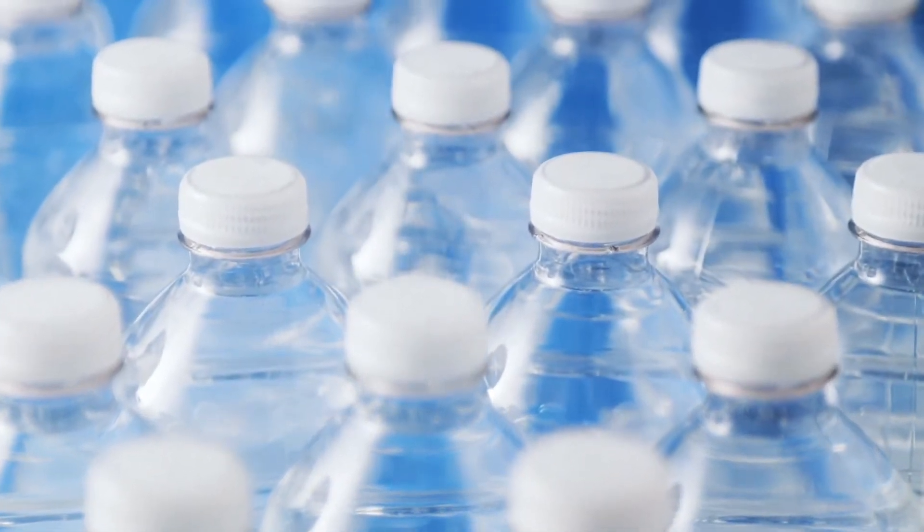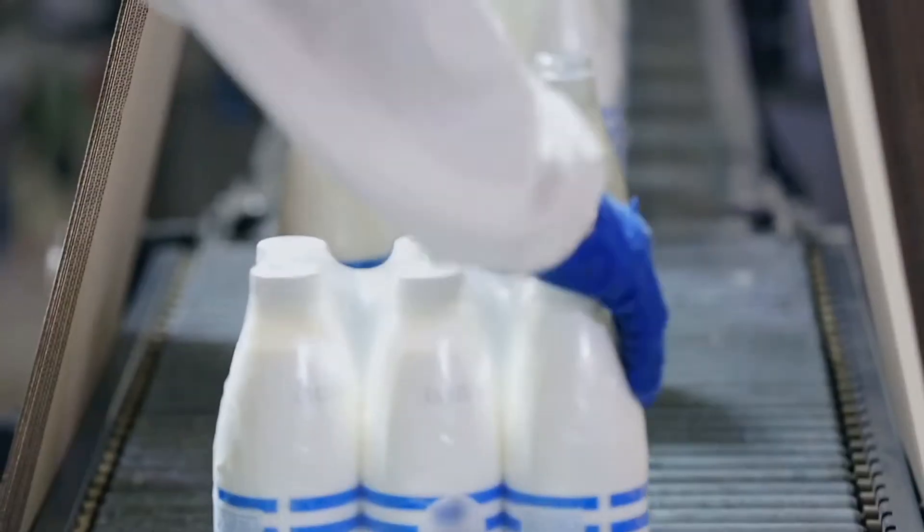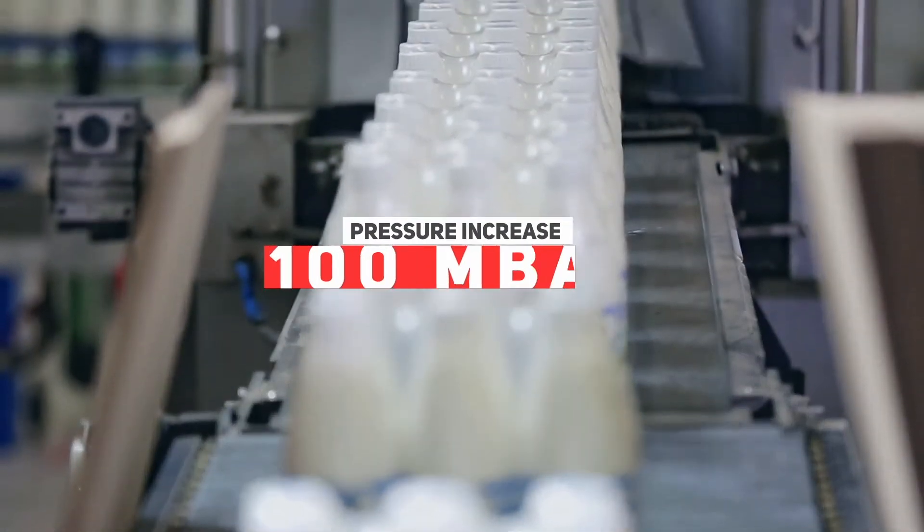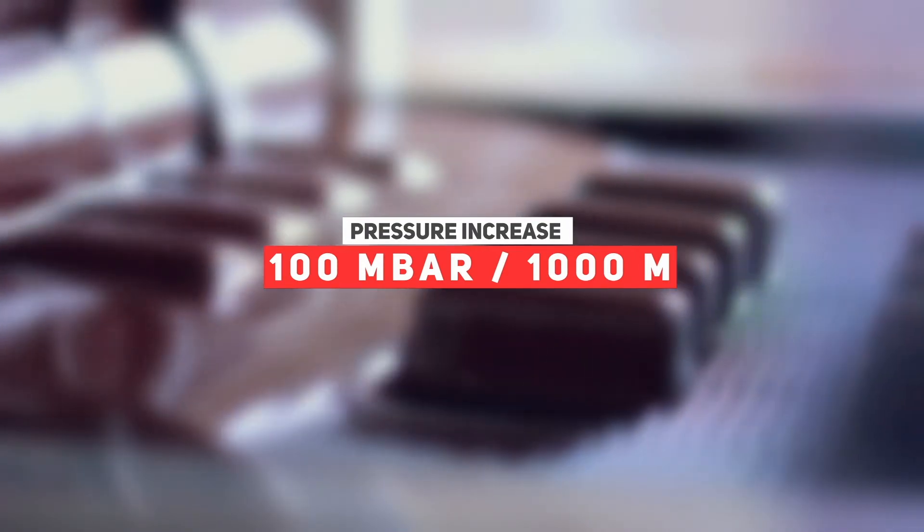In these cases, any semi-rigid packaging, for example plastic bottles, can suffer deformation by descending even 1,000 meters with respect to the manufacturing area, because the atmospheric pressure increases by approximately 100 millibar every 1,000 meters.